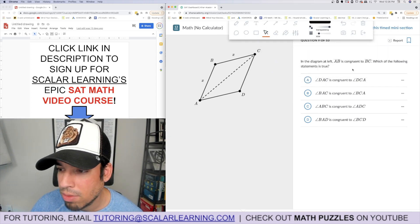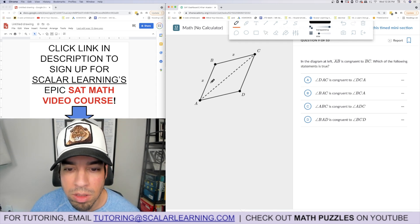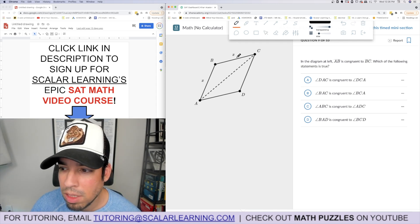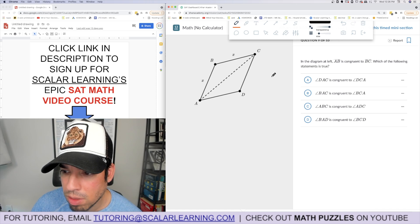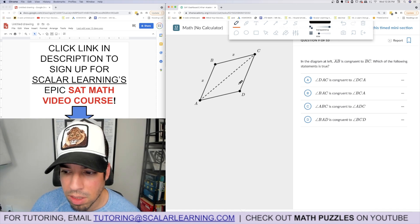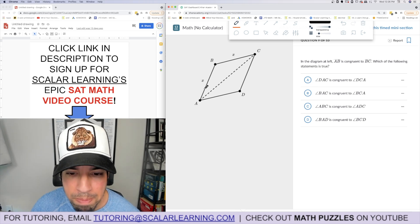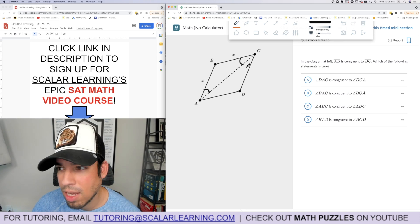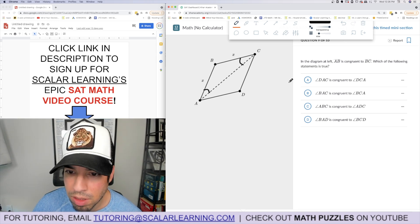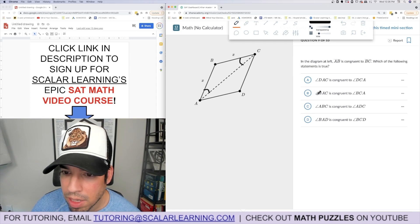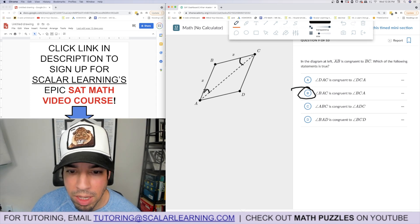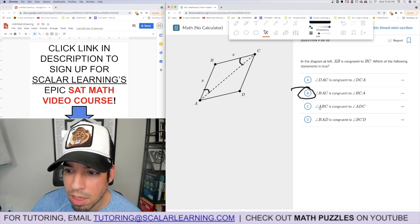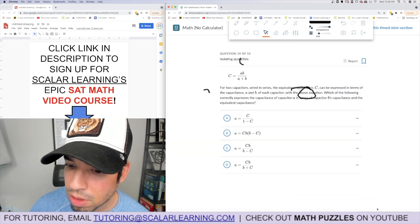And here we go. In the diagram at left, AB is congruent to BC. Cool, that means they're equal. Nice. Which of the following statements is true? Okay, this is equal to this is equal to, okay, what can we say? Oh, we can say that BAC is equal to BCA. That's an if sides and angles theorem. So let's see if they have that. BAC, BAC, boom right there. BAC is congruent to BCA. Yeah, yeah. Legend.